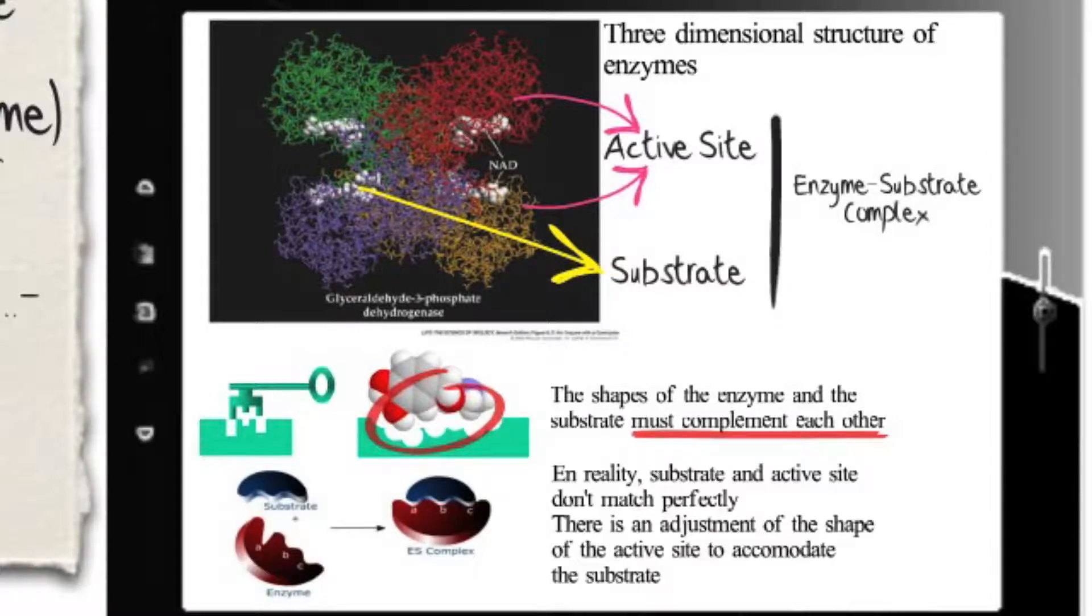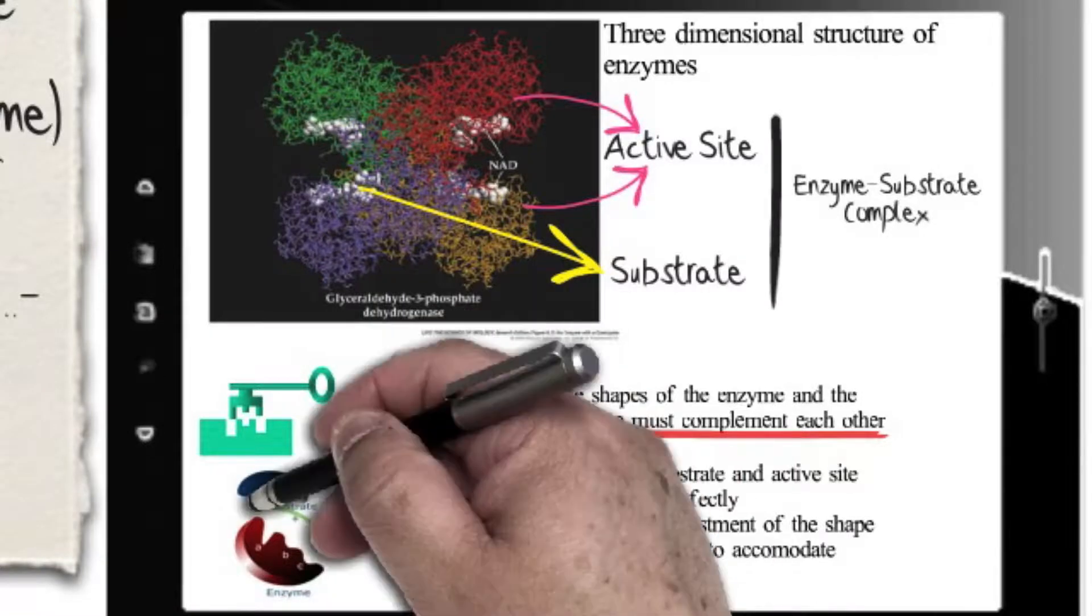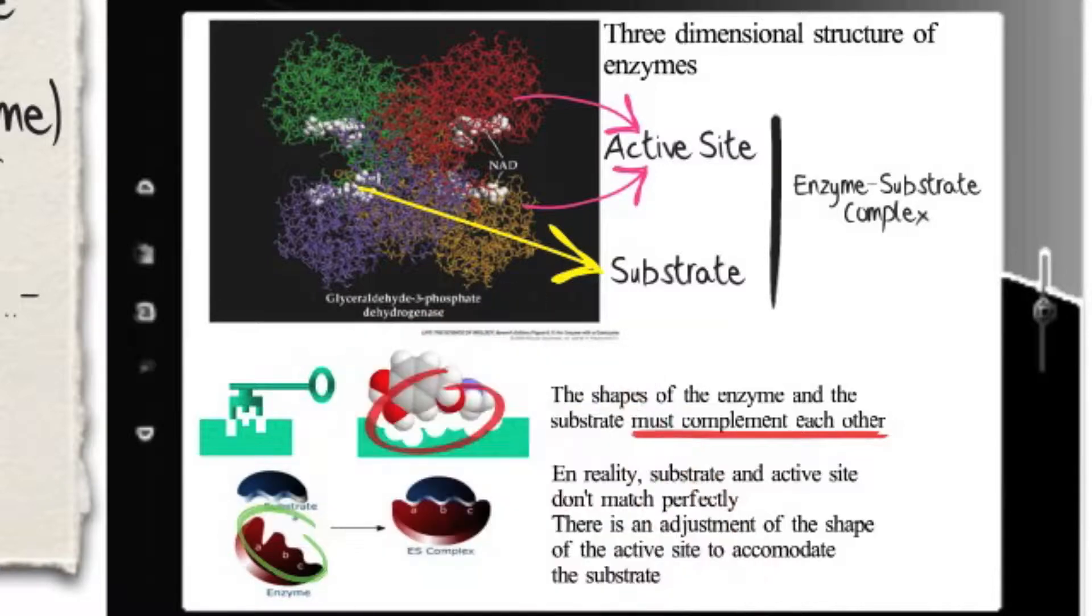A perfect fit does not occur until the substrate and the enzyme bind together, in which case the active site must change to better accommodate the substrate. This is known as the induced fit model.